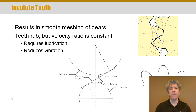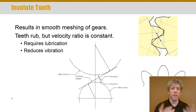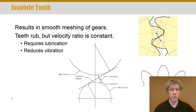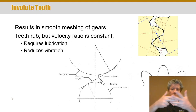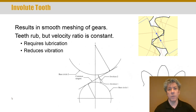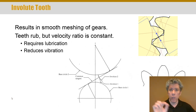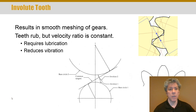A side effect of the involute shape is that there is rubbing between the teeth — they don't just roll on each other. So lubrication is always required with gear teeth. You want there to be oil in that gap in order to transmit the load and to prevent friction, and that results in teeth that don't wear as quickly.